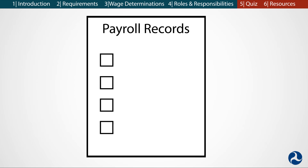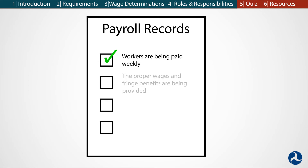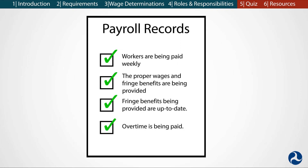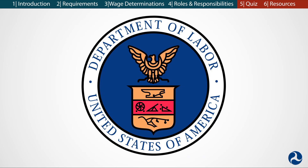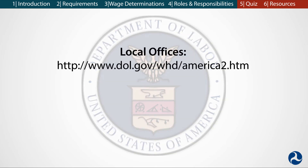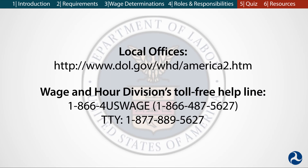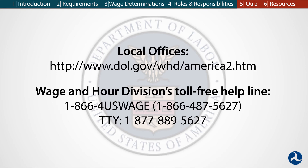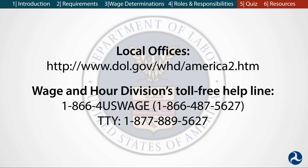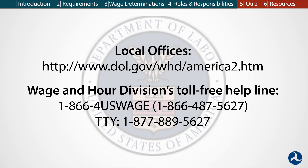FRA may request this information to verify DBA compliance. Payroll spot checks are reviews of payroll records for the laborers and mechanics working on a project. These spot checks should verify that workers are being paid weekly, that the proper wages and fringe benefits are being provided, that those fringe benefits are up to date, and that overtime is being paid. The results of the interviews, payroll spot checks, and any potential violations that are discovered should be documented. Speak with the FRA grant or loan manager to get information on how to document this information. Project sponsors should report potential violations to the FRA grant or loan manager or to the Department of Labor. Laborers and mechanics can report DBA violations either to their employer or to the Department of Labor's Wage and Hour Division. Project sponsors should check with their FRA grant or loan manager to determine how often the interviews and payroll spot checks should be conducted.